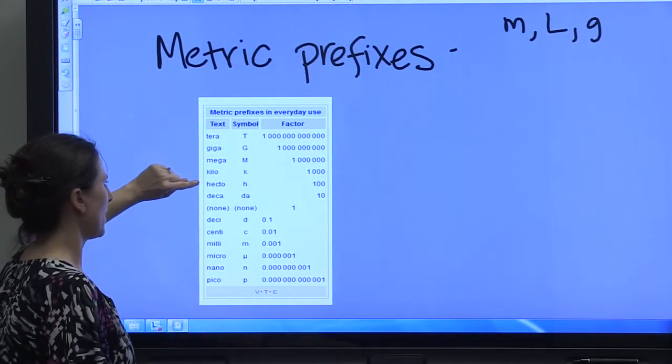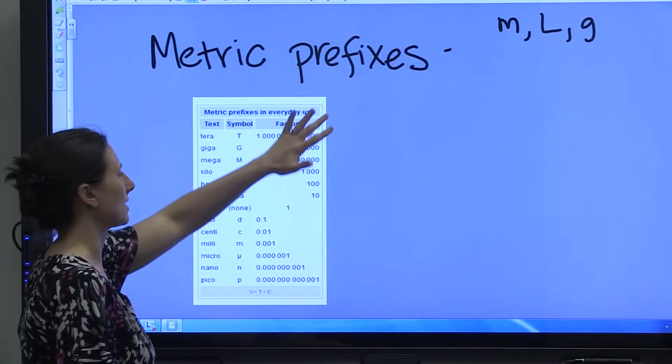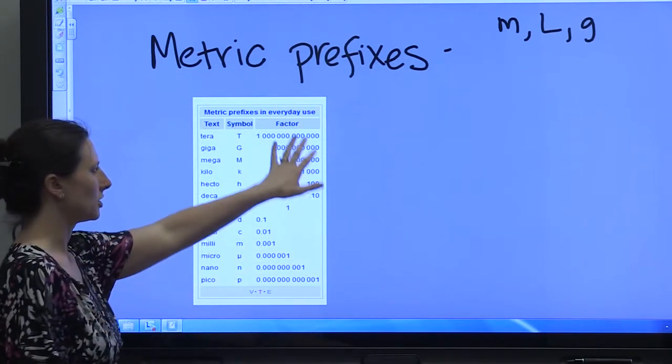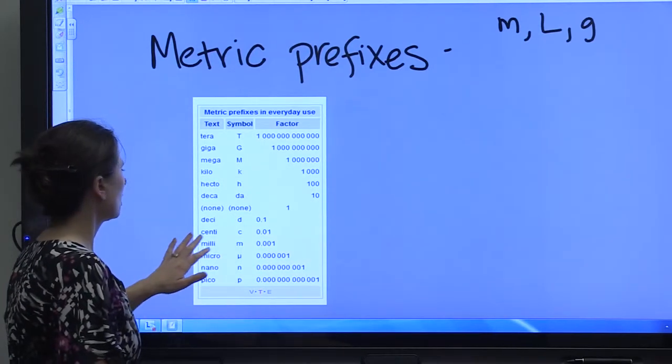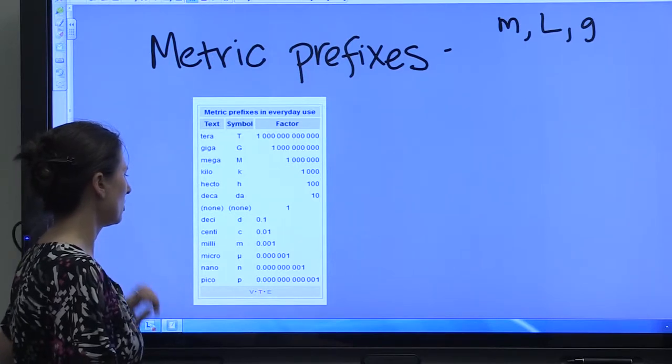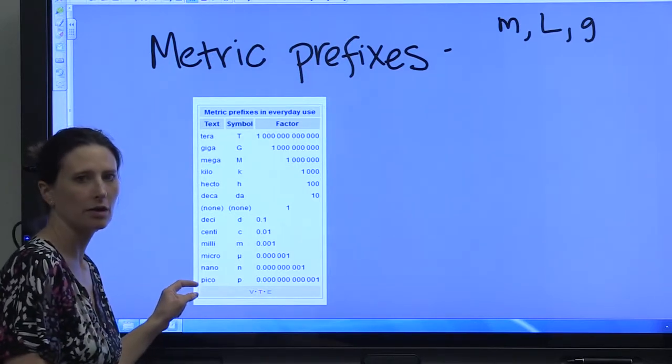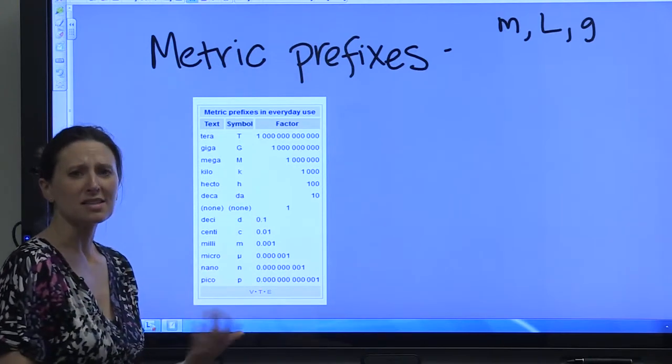These are all larger than the standard, and you can tell that because the factors are non-decimal. And deci, centi, milli, micro, nano, and pico are all smaller than the standard measure. That's something you want to keep in mind.